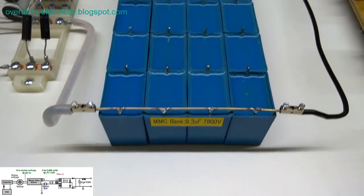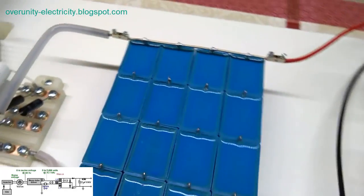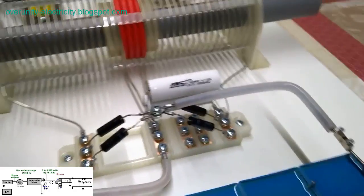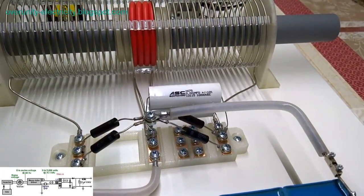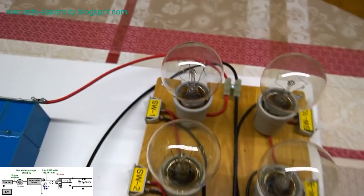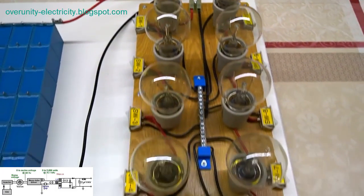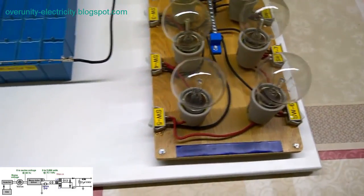For instance, if 3,000 volts are input into a primary coil with 10 turns, the secondary coil with 30 turns will yield an impressive 9,000 volts. This basic principle demonstrates the power of induction coils in voltage transformation.